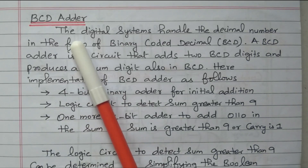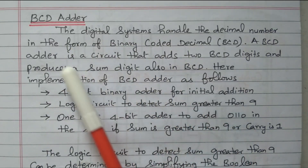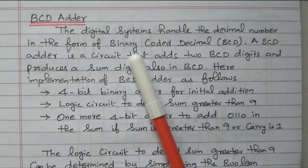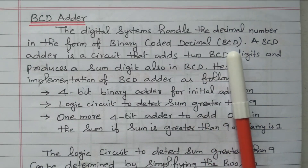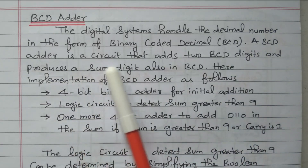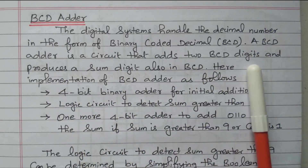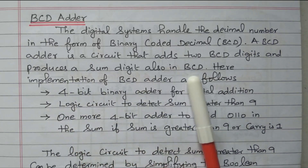The BCD adder: the digital system handles the decimal number in the form of binary coded decimal, BCD, that is four digits. Each decimal number is represented by four digits, that is called BCD — binary coded decimal. A BCD adder is a circuit that adds two BCD digits and produces the sum digit also as a BCD.